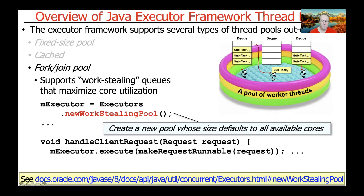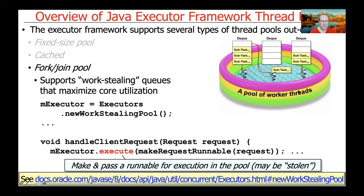You create a work-stealing pool by calling newWorkStealingPool, which creates a thread pool defaulting to the number of available cores — so four cores gives four worker threads. When requests come in, you call execute and pass in a request, just as before. The work is initially queued on the deque of the thread where execute is called, and if that thread is busy, other threads in the fork-join pool will steal that queued work.